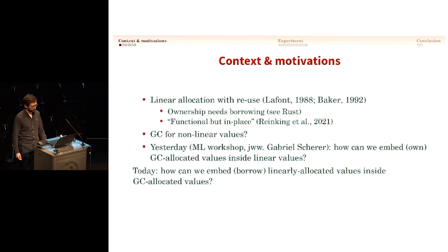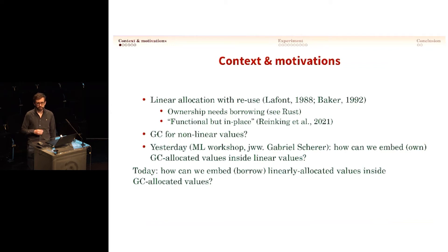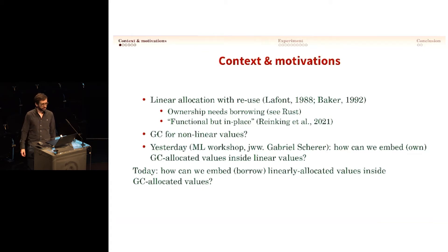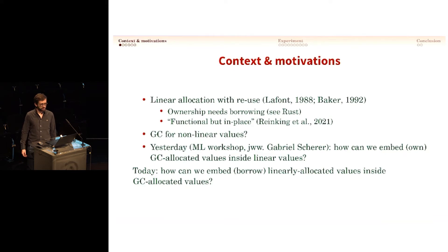But I want to do that with a GC. At the ML workshop yesterday, I explained how we can mix GC and linear allocation by embedding GC values into linearly allocated values — that was the talk about box route yesterday. In this talk, I'll do the contrary, which is to show how to borrow efficiently linearly allocated values inside GC allocated values.